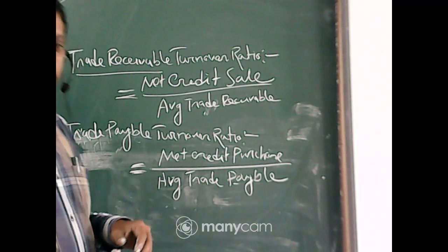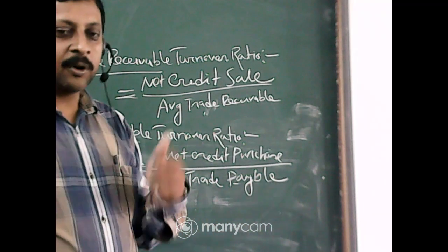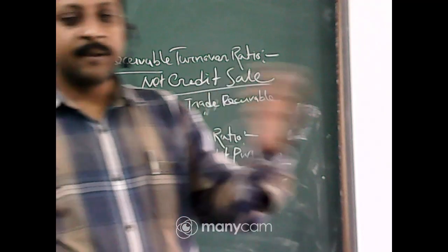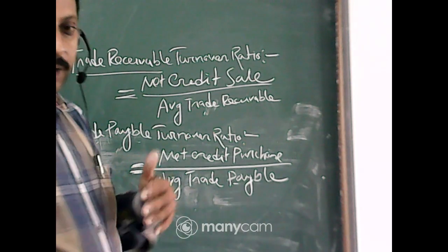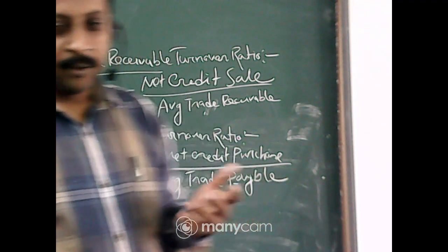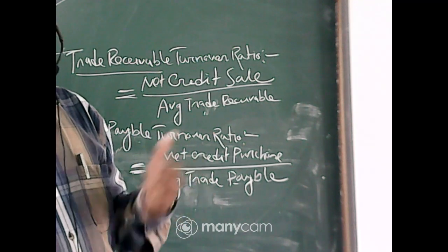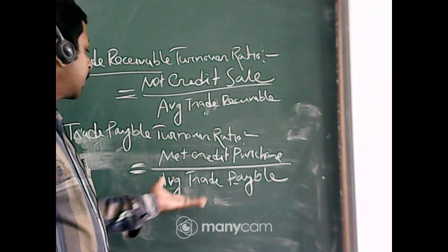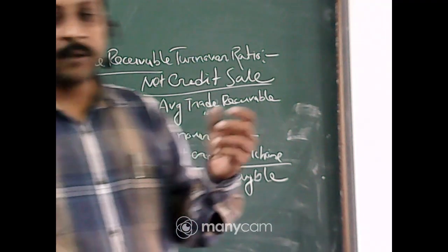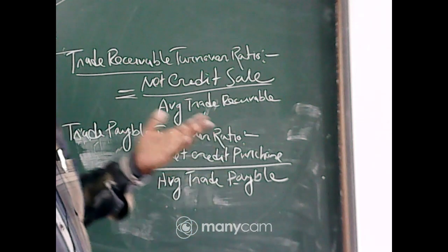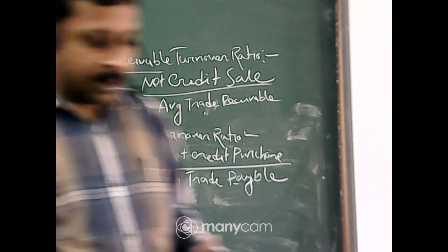What is average trade payable? There are creditors and bills payable. Sometimes we are not very trustworthy to our supplier, so the supplier issues a bill to us and we have to pay it — that is our bills payable. So trade payable consists of creditors and bills payable. The formula is: opening creditors plus closing creditors plus opening bills payable plus closing bills payable, divided by two.